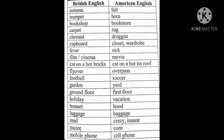Autumn — fall. Trumpet — horn. Bookshop — bookstore. Carpet rug — rug. Chemist — druggist. A chemist is one who runs a medical shop, one who deals with medicine — Americans say druggist. Cupboard — closet or wardrobe. Ill — sick. Film or cinema — movie. Flyover — overpass. The flyover bridge is called overpass. Football — soccer. Garden — yard. Ground floor — Americans call it first floor; first floor they call second floor; second floor they call third floor.